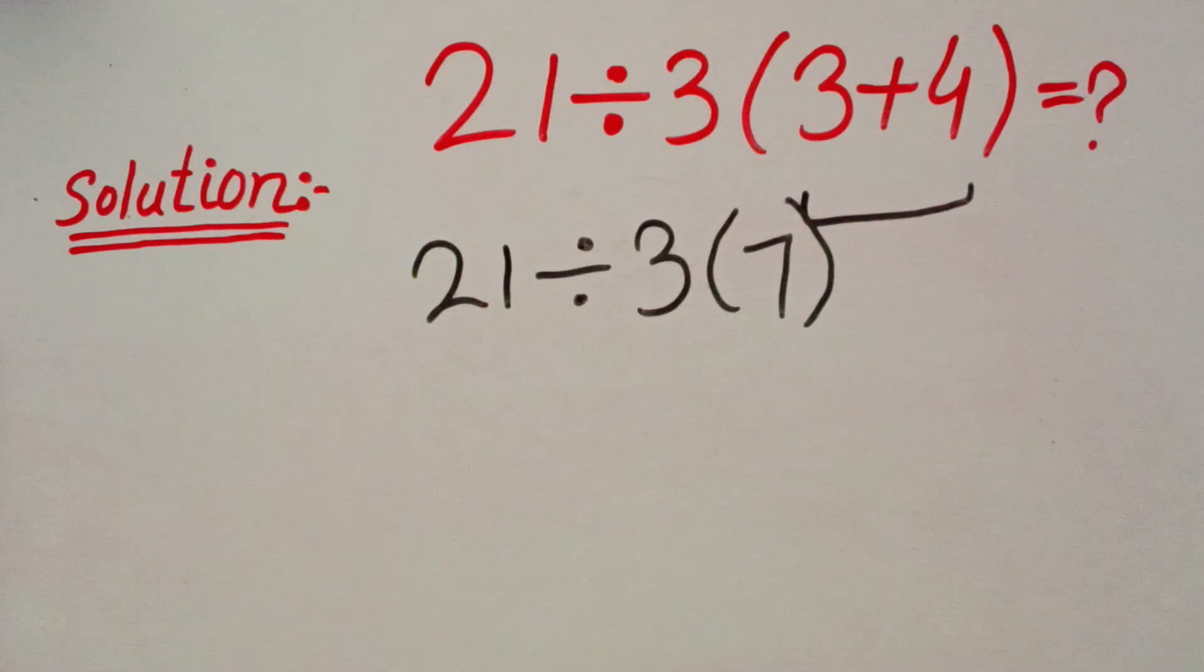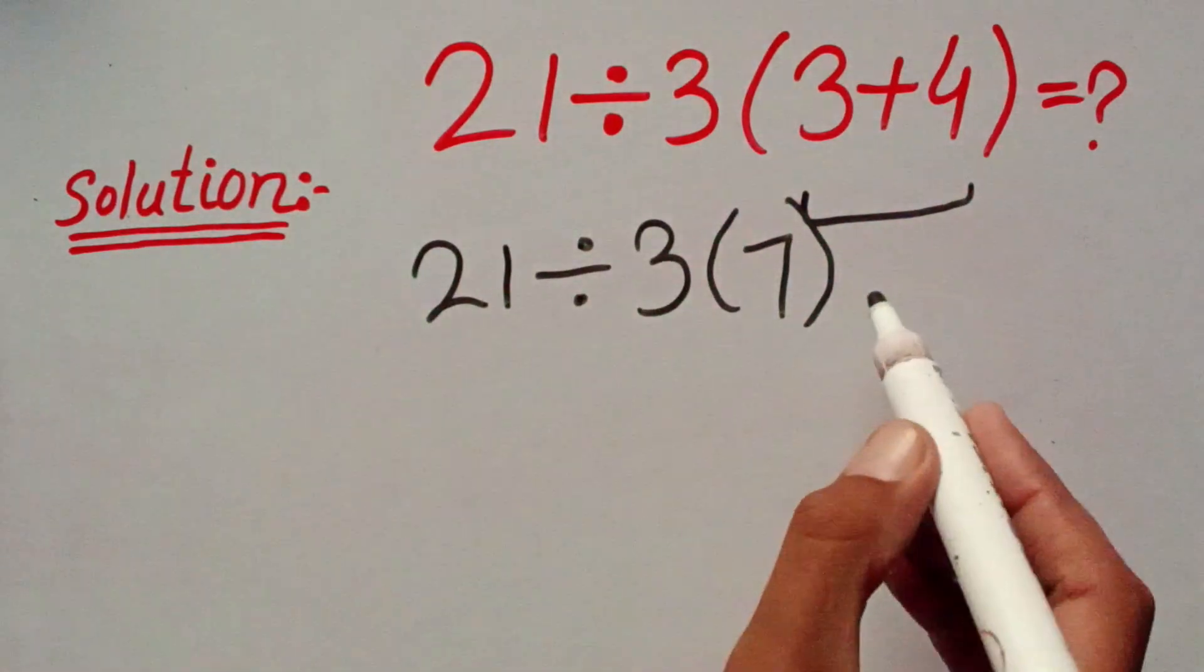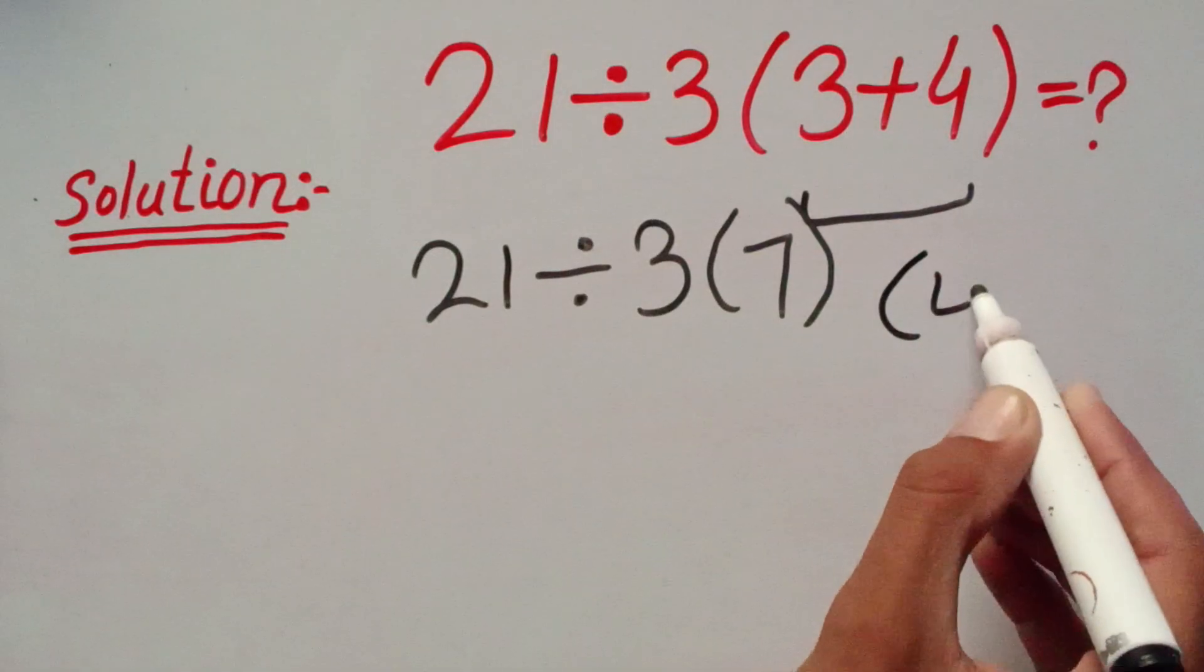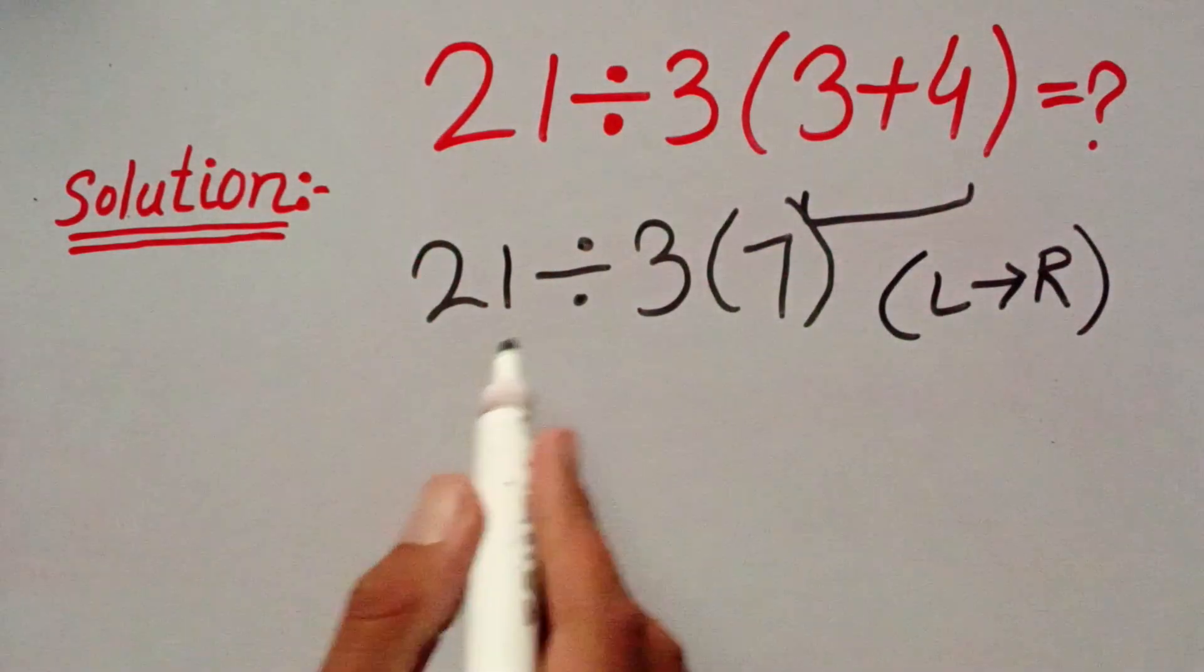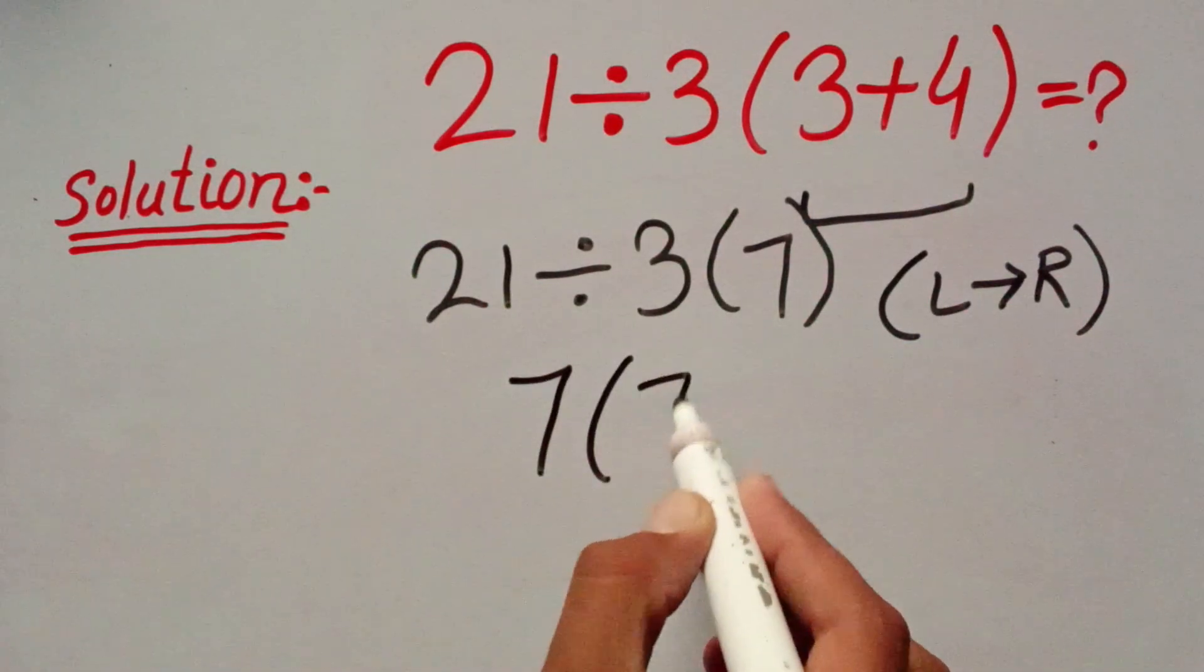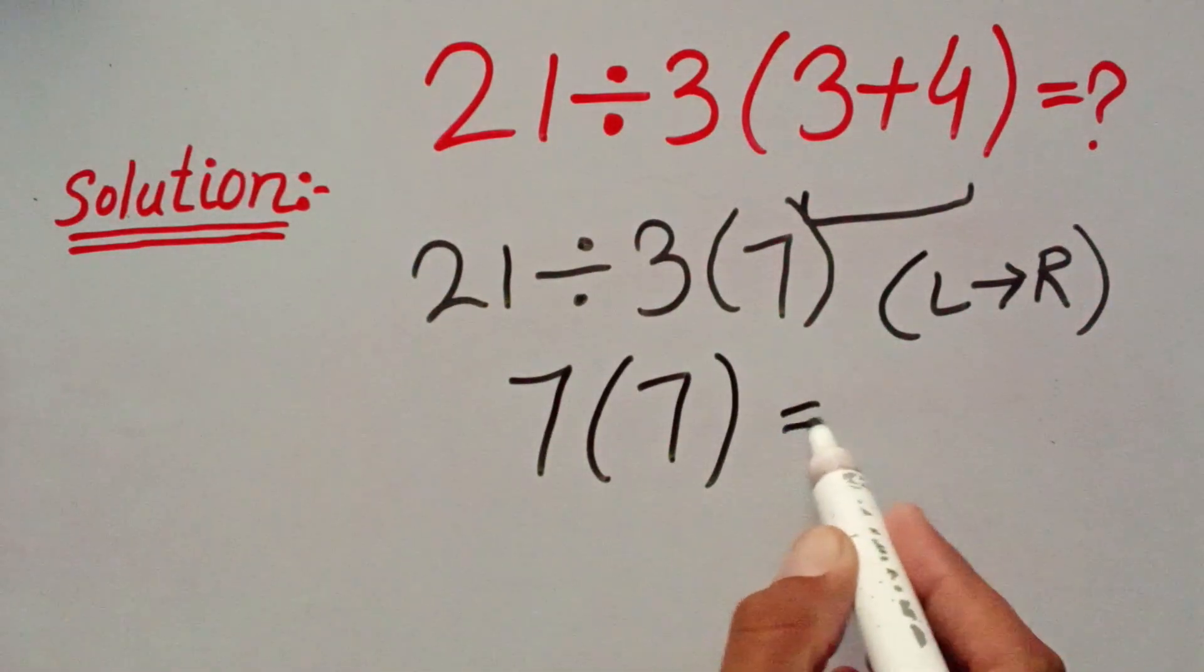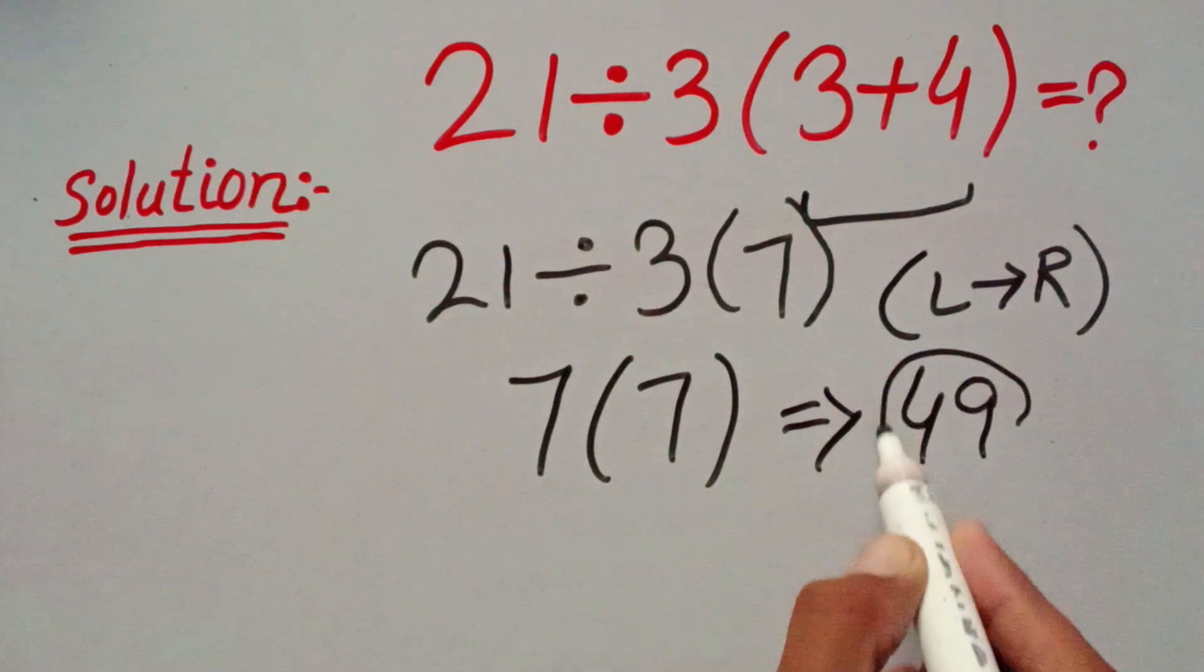According to PEMDAS rule, multiplication and division have equal priority and we can solve it from left to right. So 21 divided by 3 equals 7 and 7 times 7 equals 49.